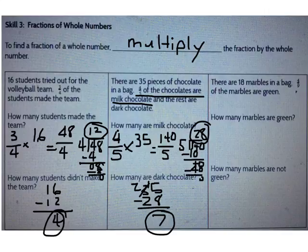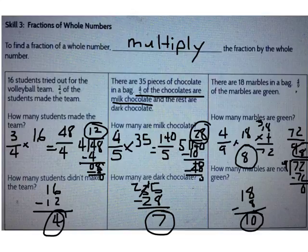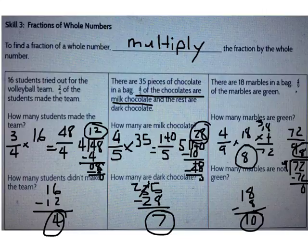Now you try one on your own. There are 18 marbles in a bag. 4/9 of the marbles are green. How many marbles are green and how many are not green? 8 marbles are green. 4/9 times 18 is 72 over 9, or 8. If I subtract 18 minus 8, I can see that 10 marbles are not green.